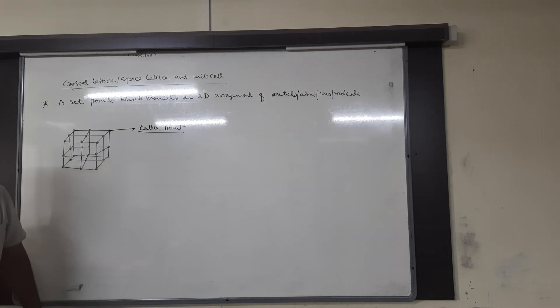Centered unit cell: the unit cell in which particles are present at corners and other than corners. Corners are compulsory; along with corners, particles are also at other positions — which may be face, center, or edge. This is called a centered unit cell, which is further classified into three types.